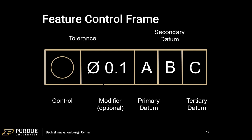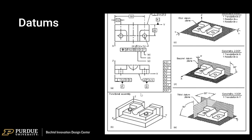We have datums A, B, and C — but what do we mean by a datum? A datum is essentially a surface we're going to put the part against to measure it. In this example, a part is set into the back corners of planes X, Y, and Z in the functional assembly. Datum D would be the first plane set down on, and it should be flat within 12 thousandths. Datum E gets pushed against the back plane and should be square within 2 thousandths. Datum F is on the far edge and should also be square within 2 thousandths.